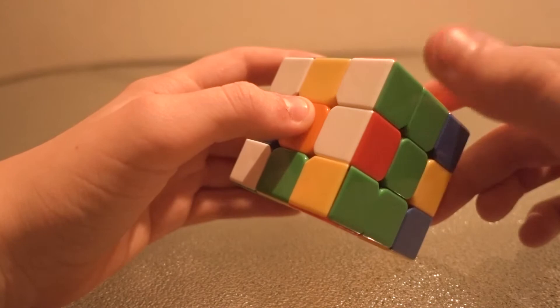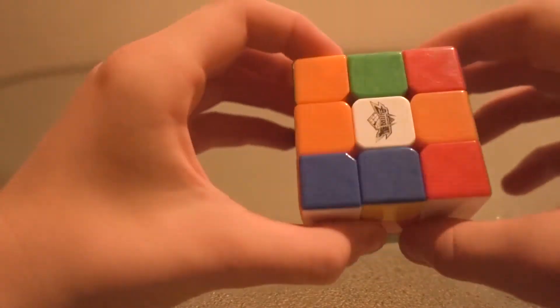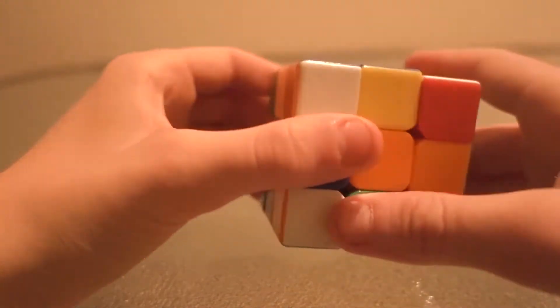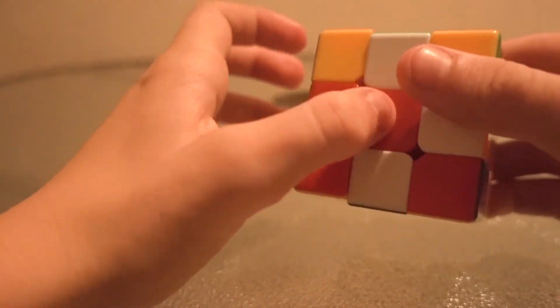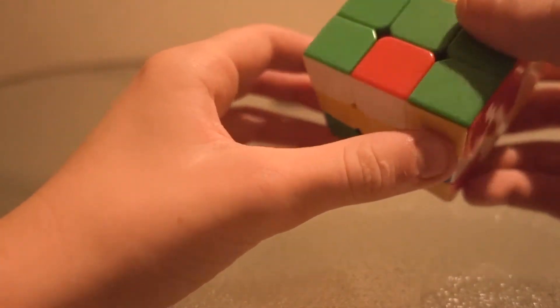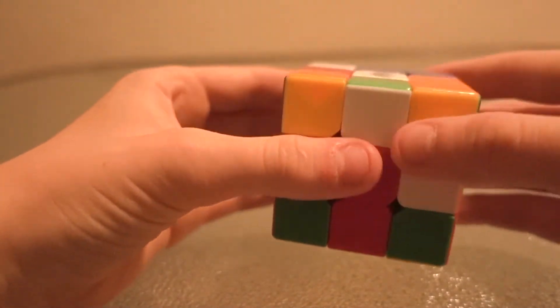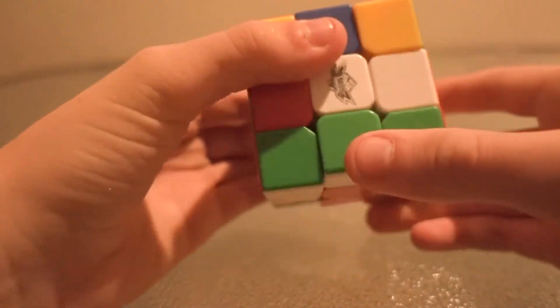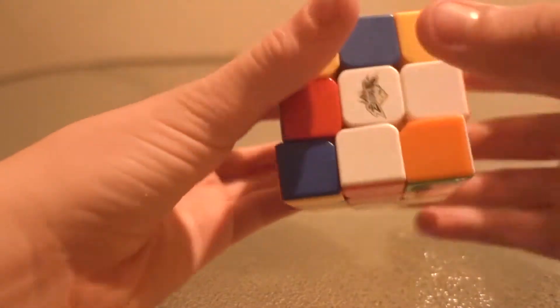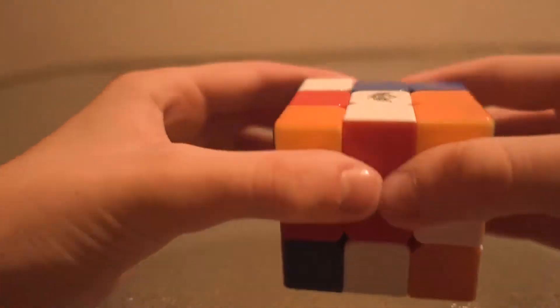So here we have red and green. We're going to turn it down once and we're going to find red. It's right here. So we're going to bring this red over one. We're going to move these two up and we're going to spin this 180 degrees and bring these back.